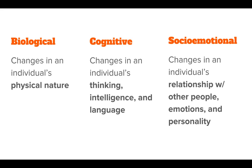For instance, thinking speed is not as fast in late adulthood as it is in early adulthood. But there's more experience to draw on, so there's a balance there — they might not think as fast technically, but they may be more knowledgeable and have more experience to draw on.